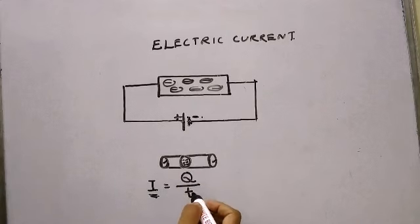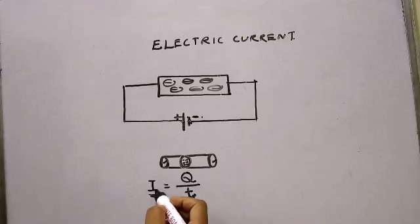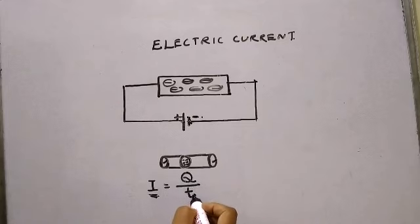I is equal to Q upon T, where I is electric current, Q is charge, and T is time.